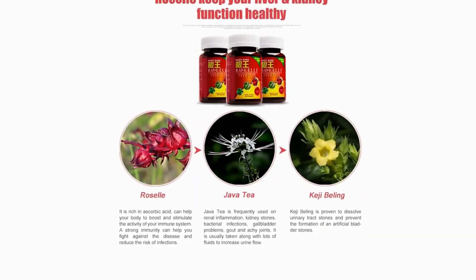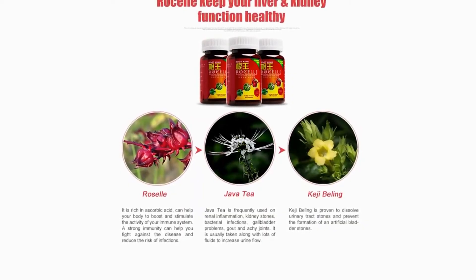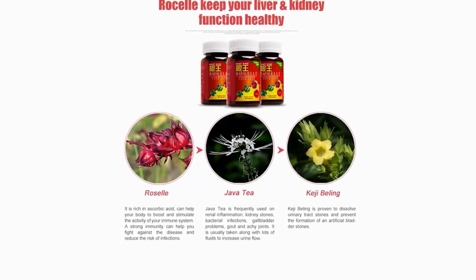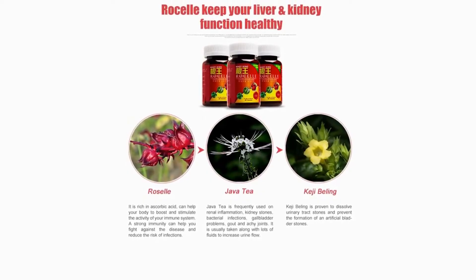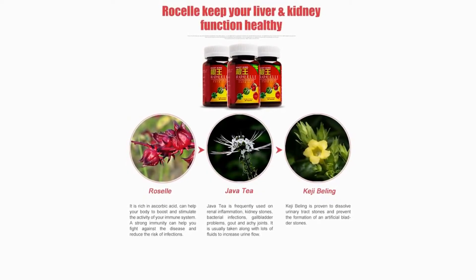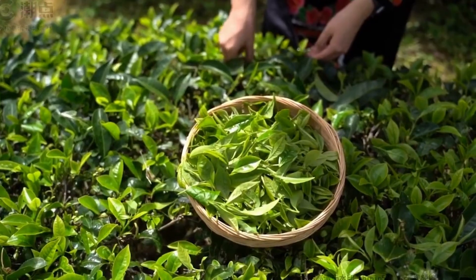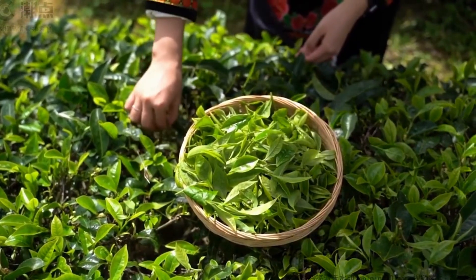It contains extracts of roselle flower, Java tea, and black face general with highly preserved and concentrated active ingredients, easily absorbed by the body. It aids in antibacterial and anti-inflammatory effects while cleansing the urinary tract. Java tea, known as the kidney tea, has been used for over 2,000 years as a precious health product.